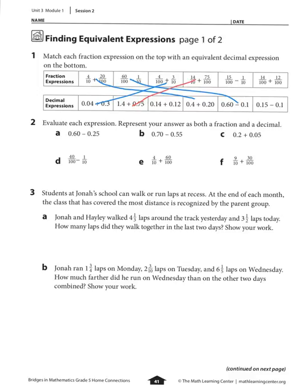Next I have 15 hundredths minus 1 tenth — looks like it's the last one. And we have 14 one-hundredths plus 12 hundredths — looks like it's this third one.